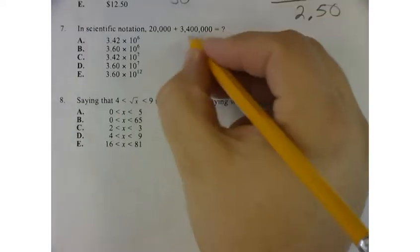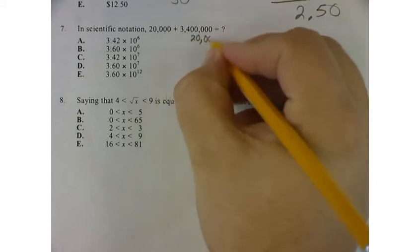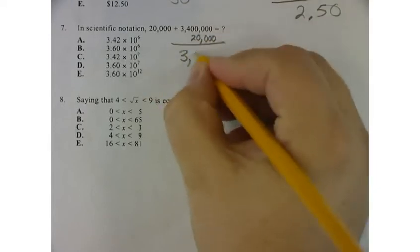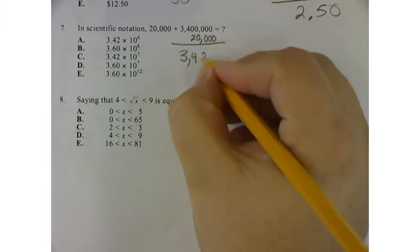Well, if I add the 20,000, that gives me 3,420,000.